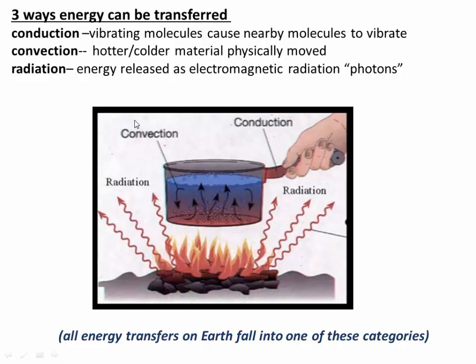A second transfer mechanism is convection — that's when hotter or colder material is physically moved to a different place and then warms or cools the surrounding material. An example is hot water on the bottom of a pan rising up and warming colder water at the top, while cold water sinks and cools water below. That's a convection cell: hotter or colder objects physically moving around.